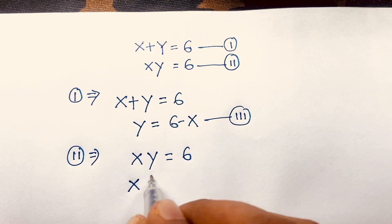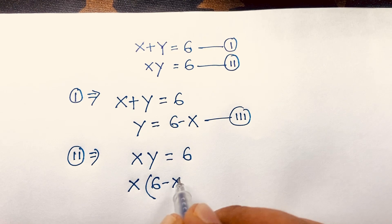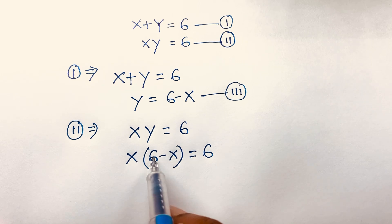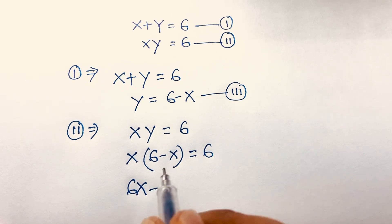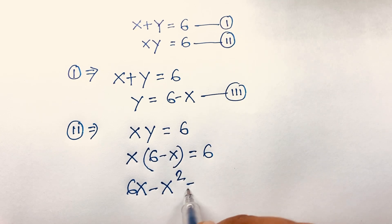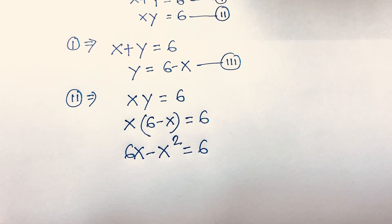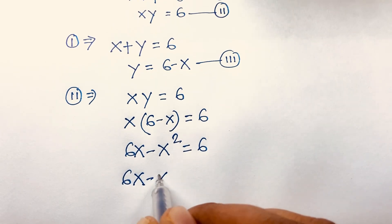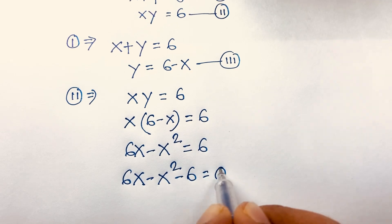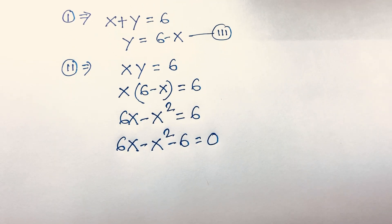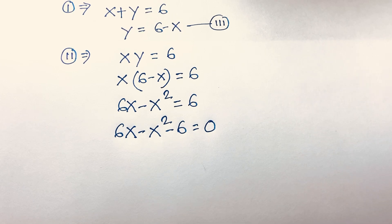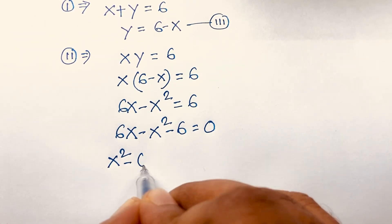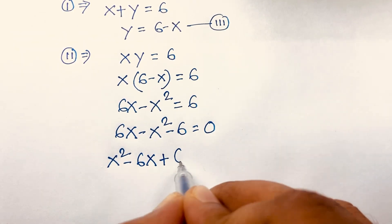Substituting y equals 6 minus x into xy equals 6, we get x times (6 minus x) equals 6. Expanding: 6x minus x squared equals 6. Rearranging: 6x minus x squared minus 6 equals 0.